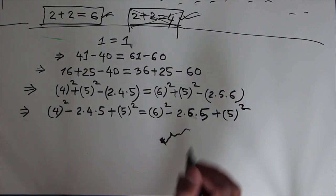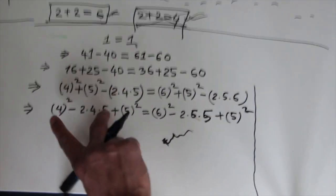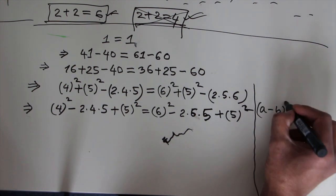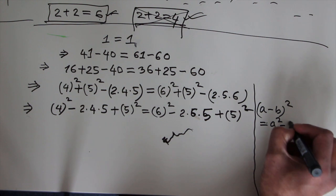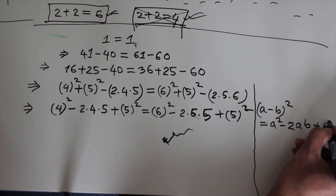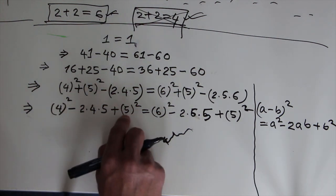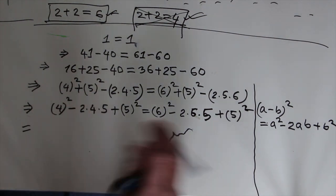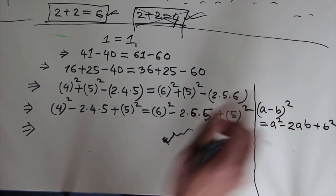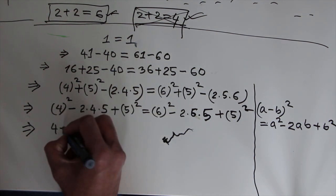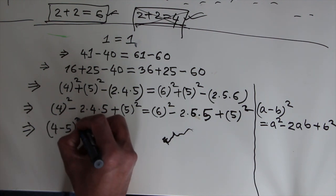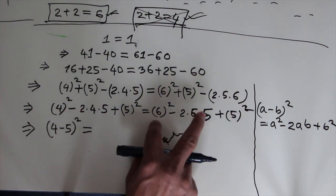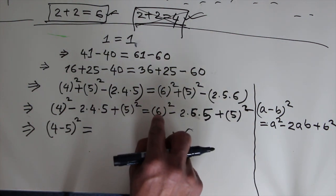Now there is a very well-known formula. This formula is: (a minus b) whole square equals a squared minus 2ab plus b squared. Look here — 4 equals a and 5 equals b, so a squared minus 2ab plus b squared equals (a minus b) whole square, which means (4 minus 5) whole square. Similarly, with a equals 6 and b equals 5, we get (6 minus 5) whole square.